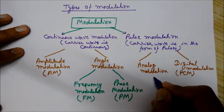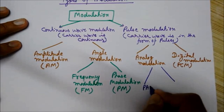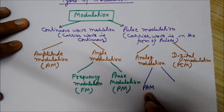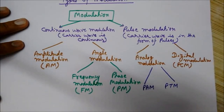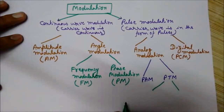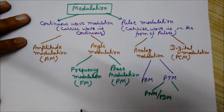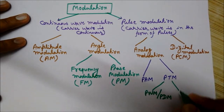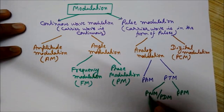The two types of analog pulse modulation are: PAM, which stands for pulse amplitude modulation, and PTM, which stands for pulse time modulation. Pulse time modulation can again be of two types: PWM, which stands for pulse width modulation, also called pulse duration modulation, and PPM, which stands for pulse position modulation. These are the two types of pulse time modulation.